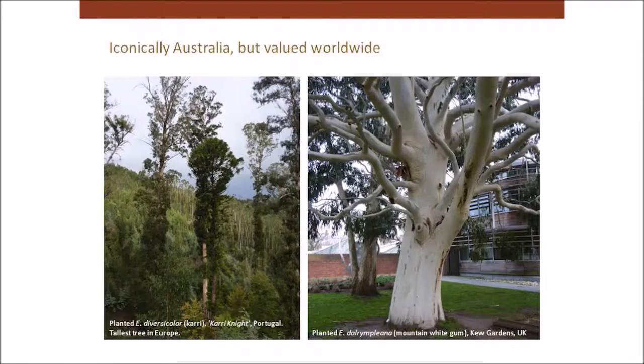It is interesting though that the rainbow gum is actually the most widely distributed species in the wild of all the eucalypts, and it doesn't grow in Australia at all. So it's one of those exceptions to the rule. They are iconically Australian, but they're valued and planted worldwide. There are actually more eucalypts planted outside of Australia than have ever been planted in Australia.